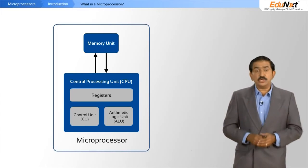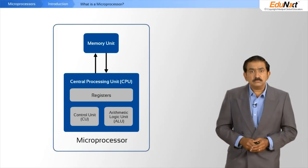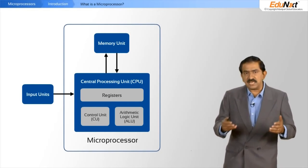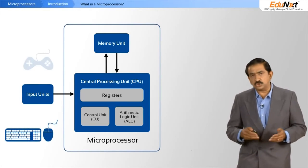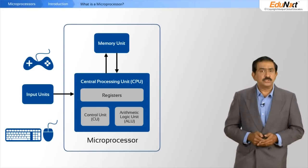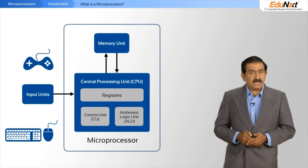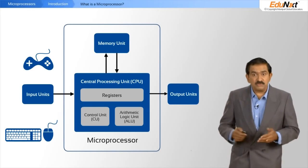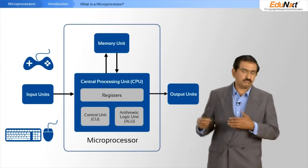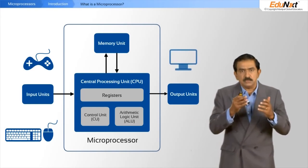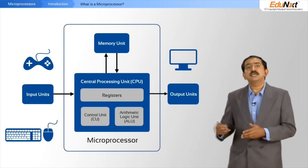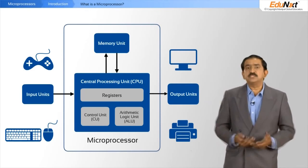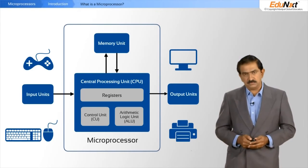A microprocessor on its own has no meaning. You need to connect input devices — devices like a keyboard, a mouse, a joystick, and so forth — and you need various output devices, typical ones being the monitor and a printer. Together this becomes a computing system, a computer.